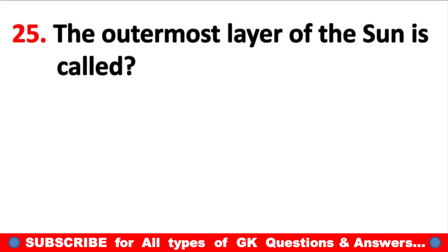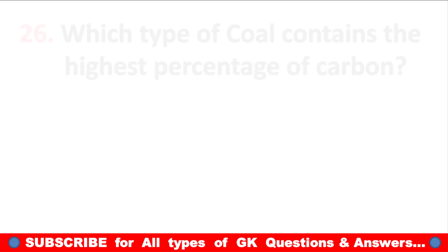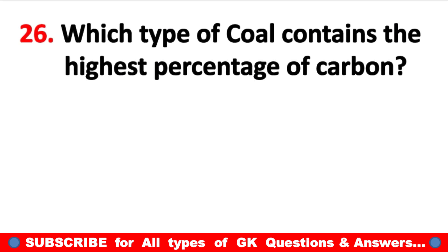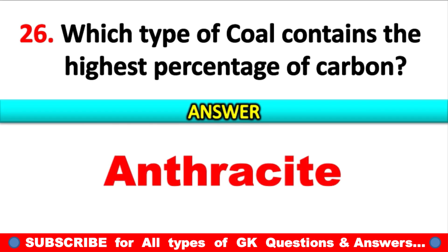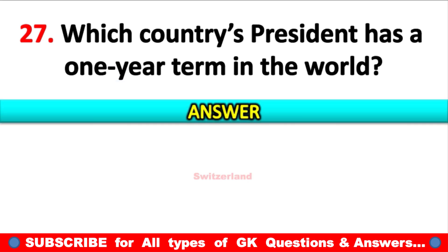The outermost layer of the sun is called? Answer: Corona. Which type of coal contains the highest percentage of carbon? Answer: Anthracite. Which country's president has a one-year term in the world? Answer: Switzerland.